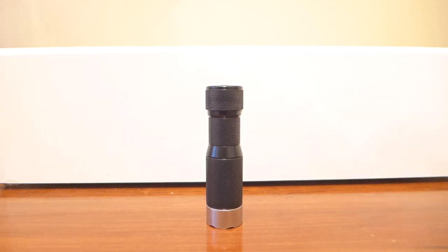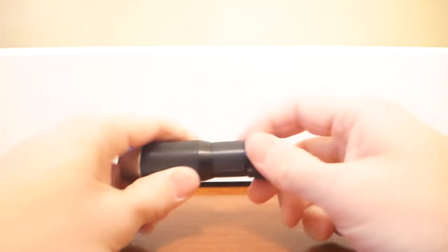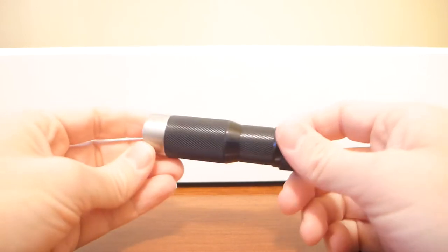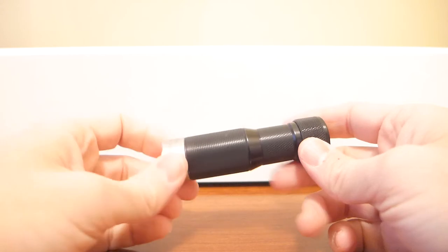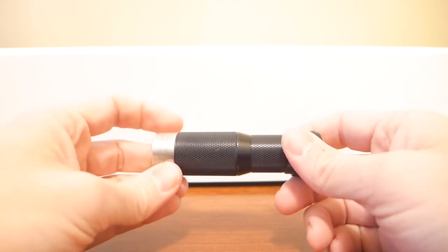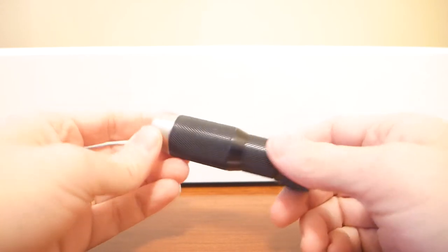Hey everybody, this is Everyday Commentary and this is a video overview of this light. And this light is the HDS Systems Rotary Executive 200. And so I'll explain what each one of those things means.